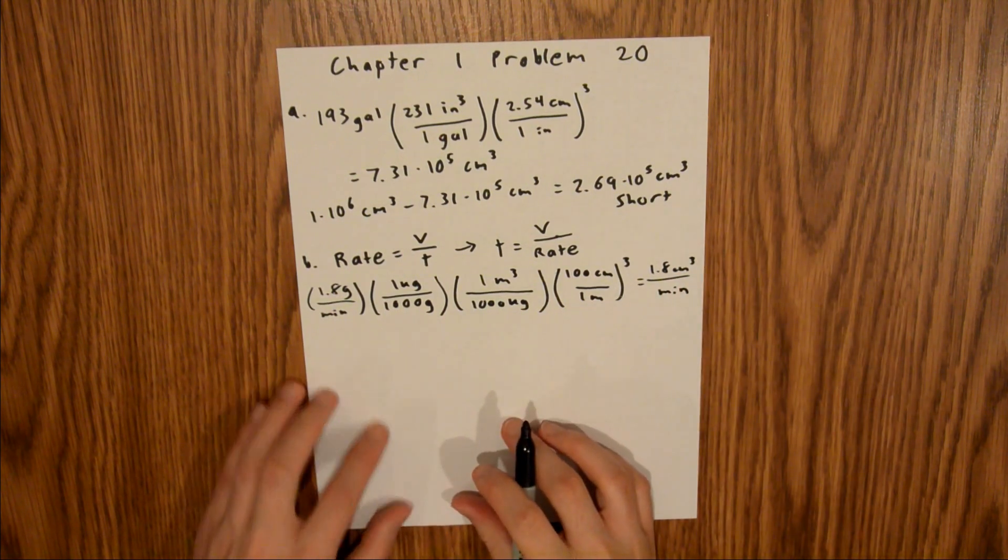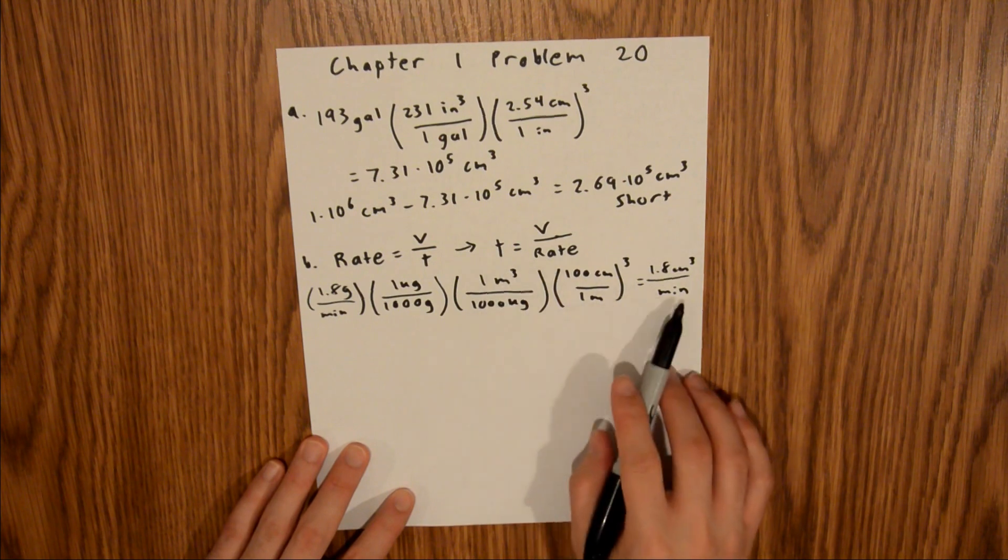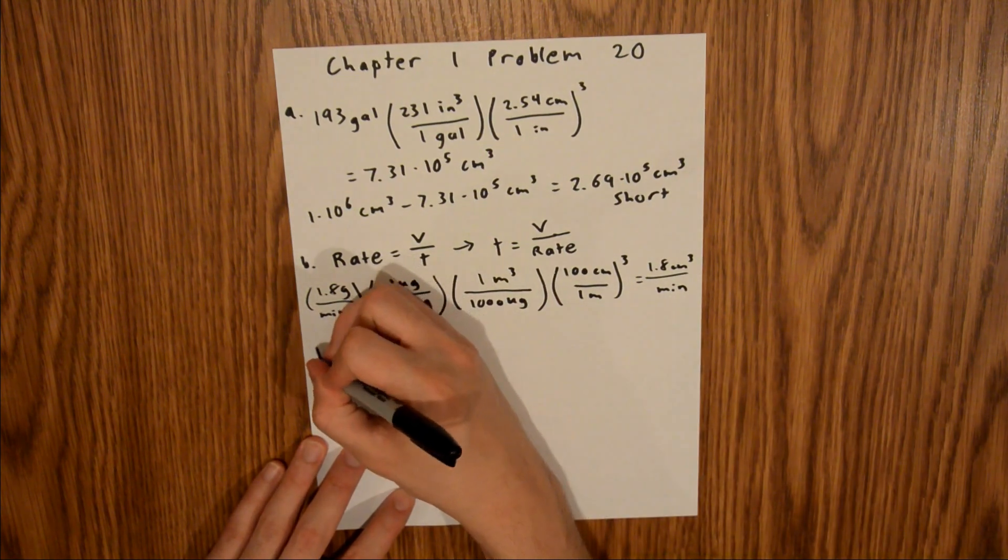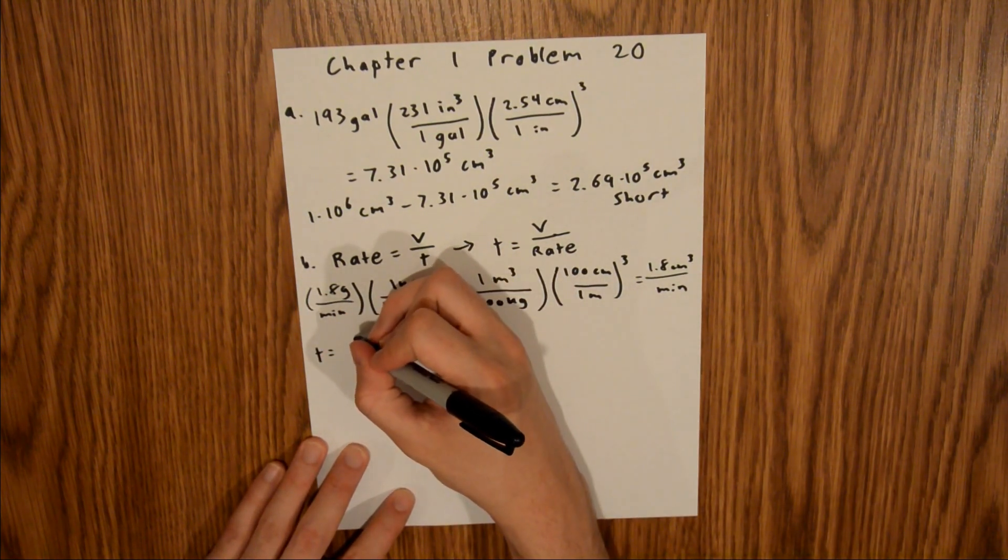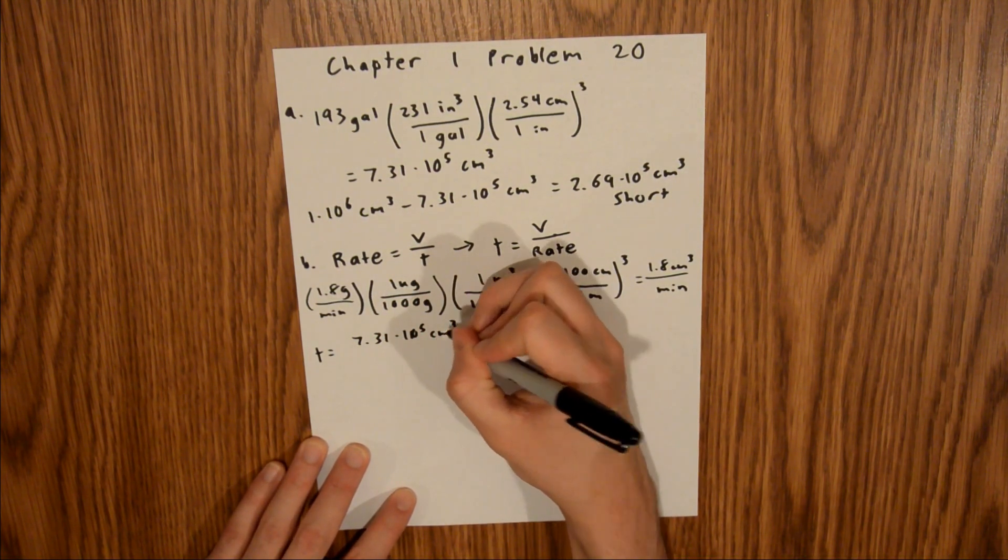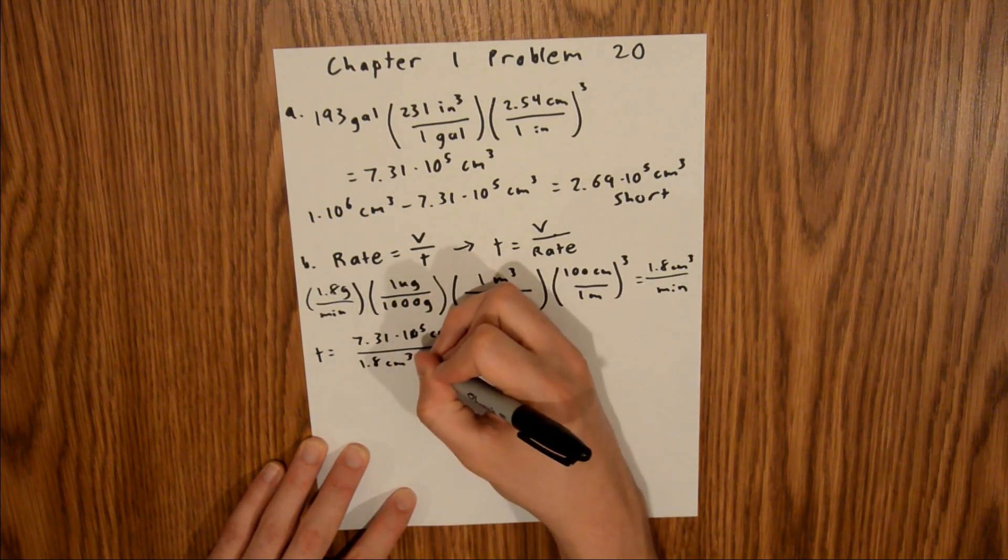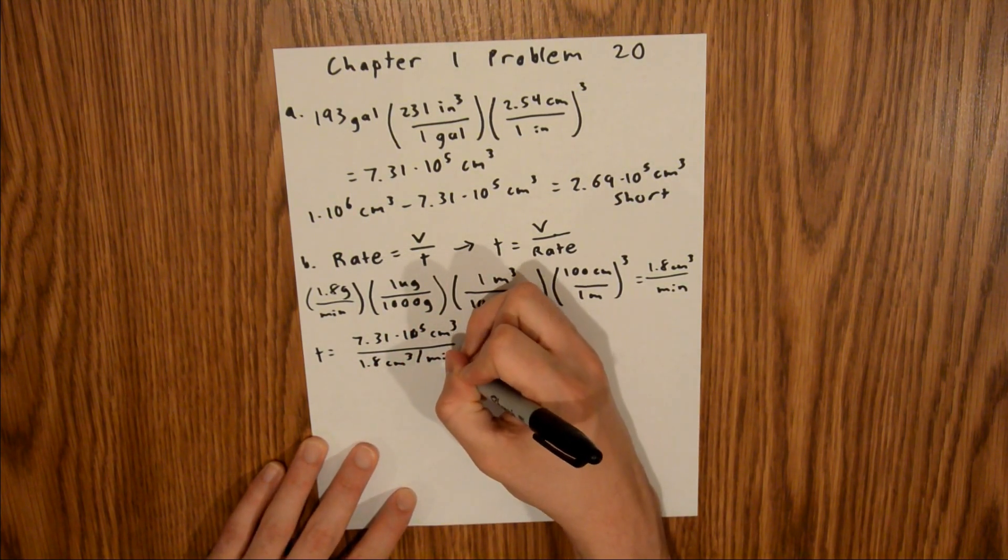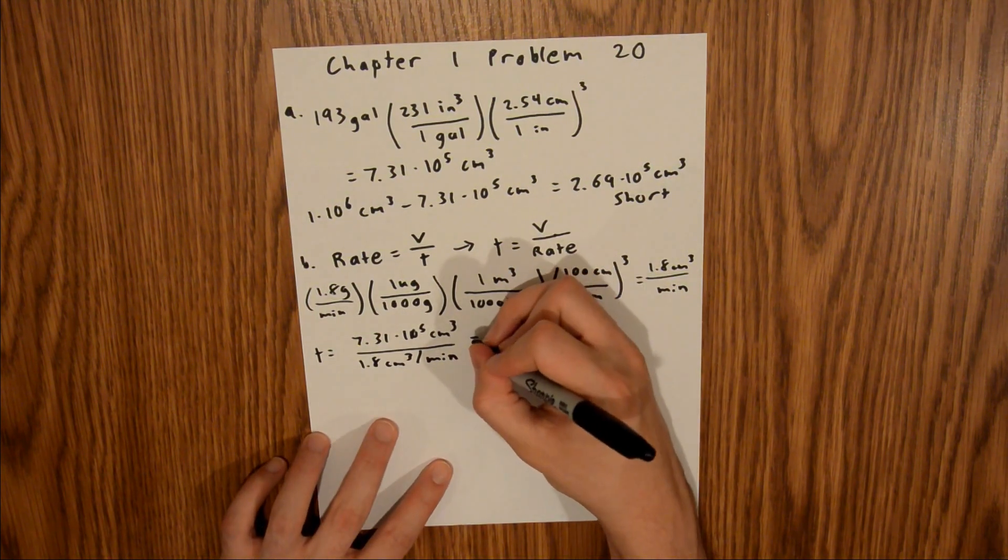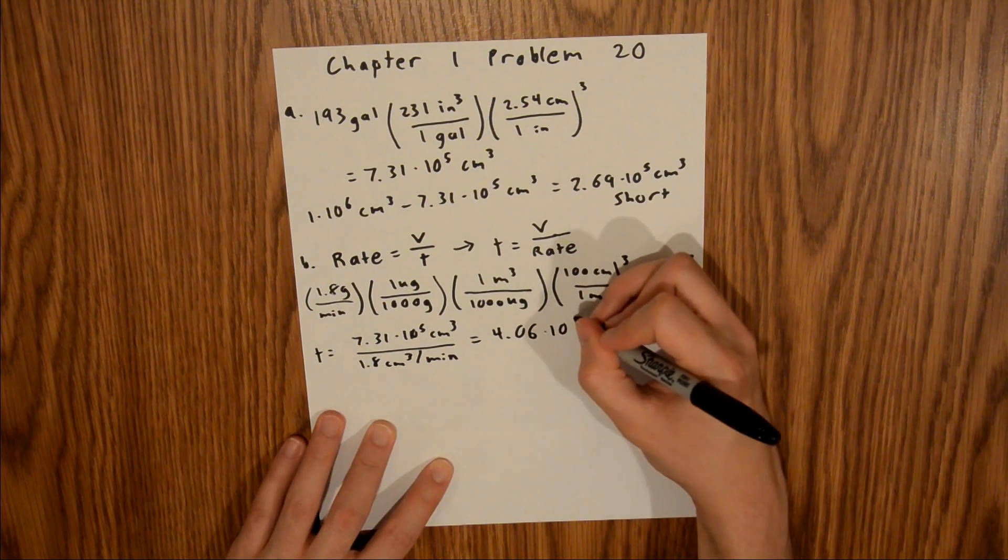And so now we can plug this back into our time equation in order to get our time in terms of minutes. And so here we have t is equal to 7.31 times 10 to the fifth centimeters cubed, divided by 1.8 centimeters cubed per minute, and if you plug that into your calculator, that'll be equal to 4.06 times 10 to the fifth minutes.